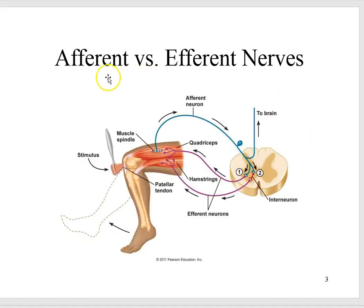We have the afferent versus efferent nerves. The afferent are the sensory nerves, and the efferent neurons are the motor neurons. The sensory nerves, of course, send signals to the brain when you sense something. Motor neurons send signals from the brain to the muscles.